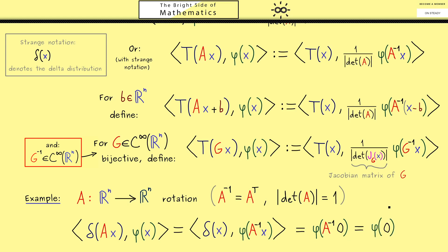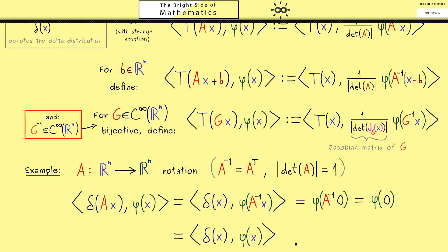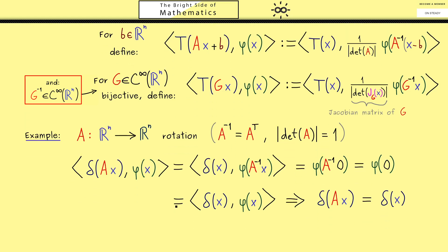However of course φ of 0 can be written with a delta distribution. It's simply delta applied to the test function φ. And now because this holds for all test functions we see δ_x is the same as δ_(Ax). More precisely saying it in the correct way the two distributions are the same. Now because this holds for every rotation we can say that the delta distribution is invariant under rotations.